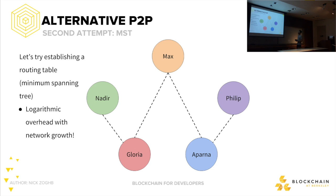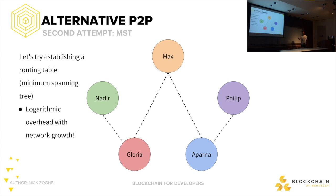There's only logarithmic overhead with network growth — that's a really good thing. Think about having to connect a peer to everybody else every time a new peer joins the network — that's enormous overhead. But with MST, you only make a couple of connections every time a new person joins, just enough to maintain the minimum spanning tree.